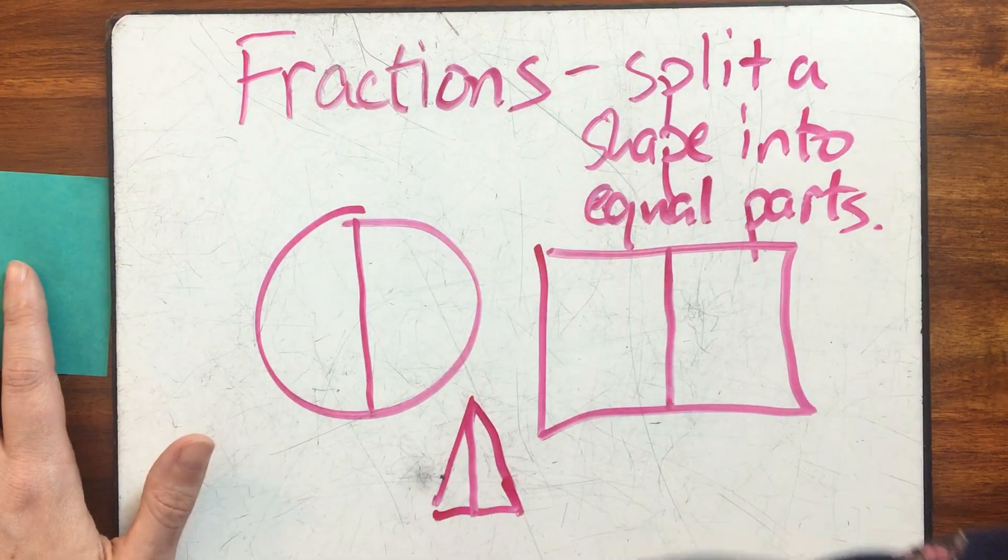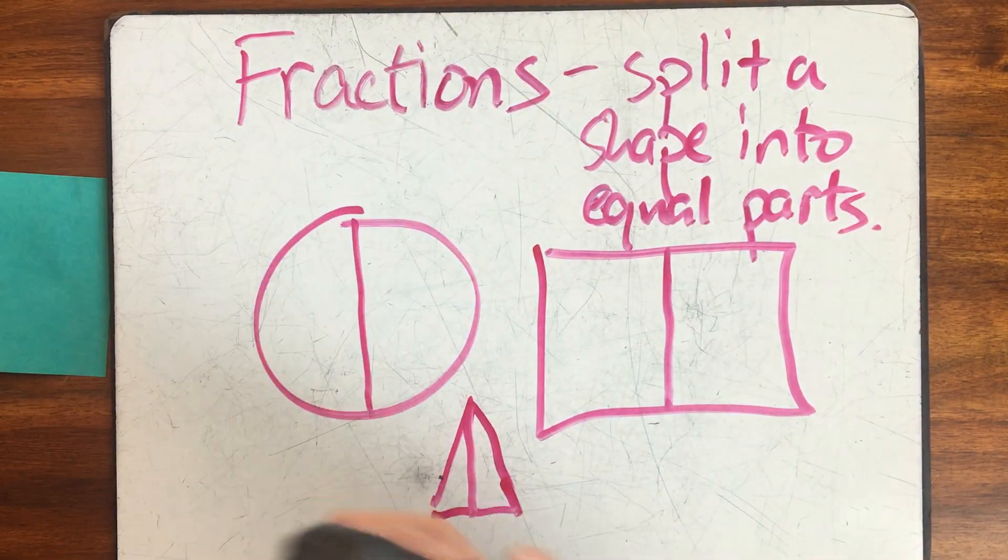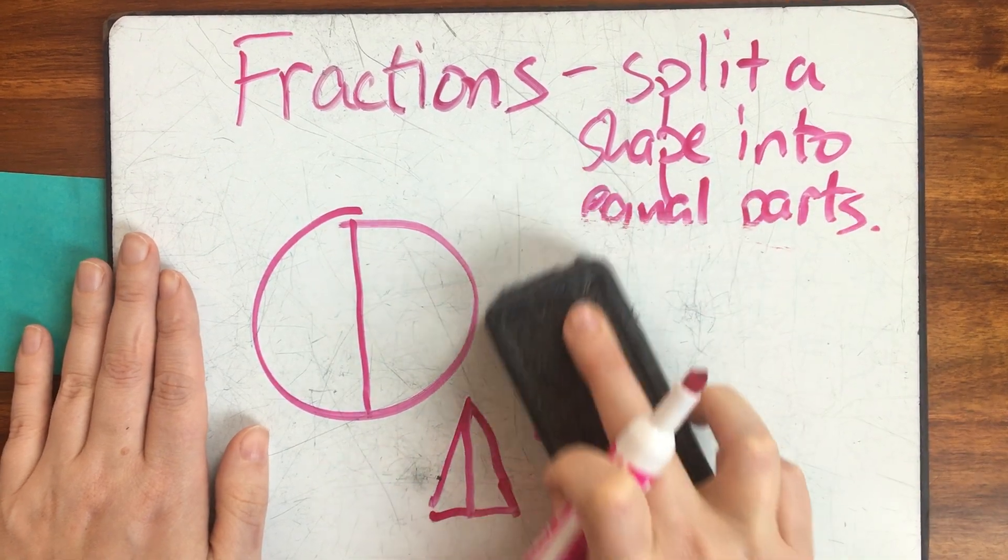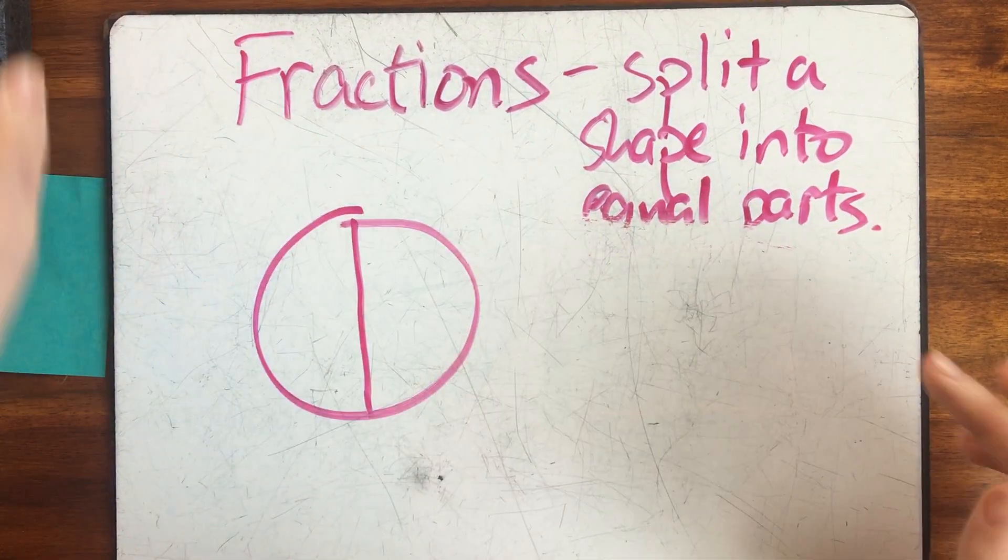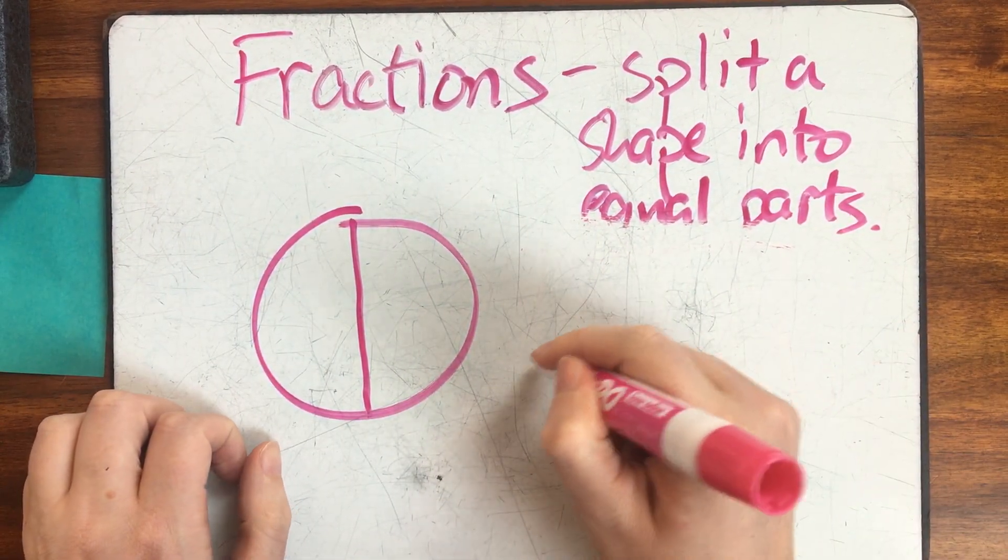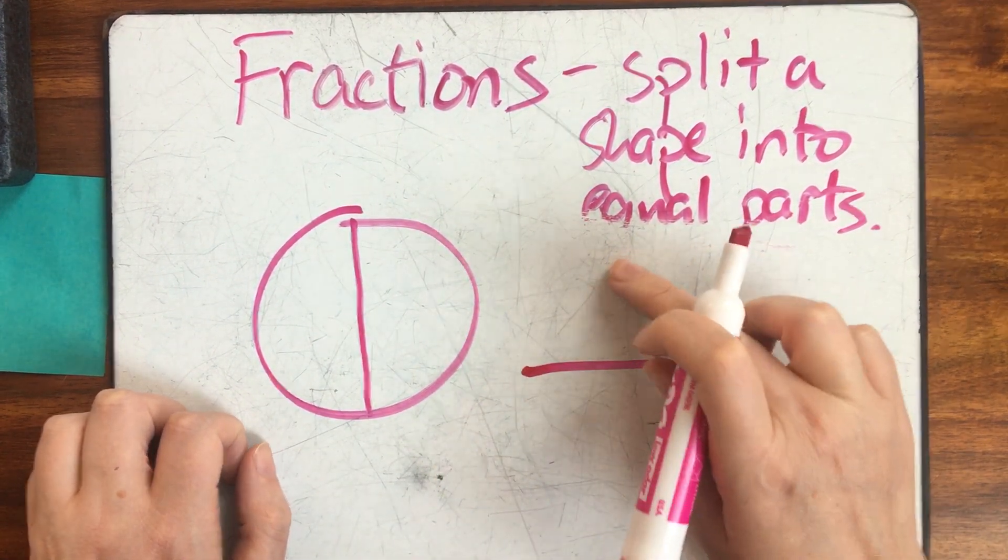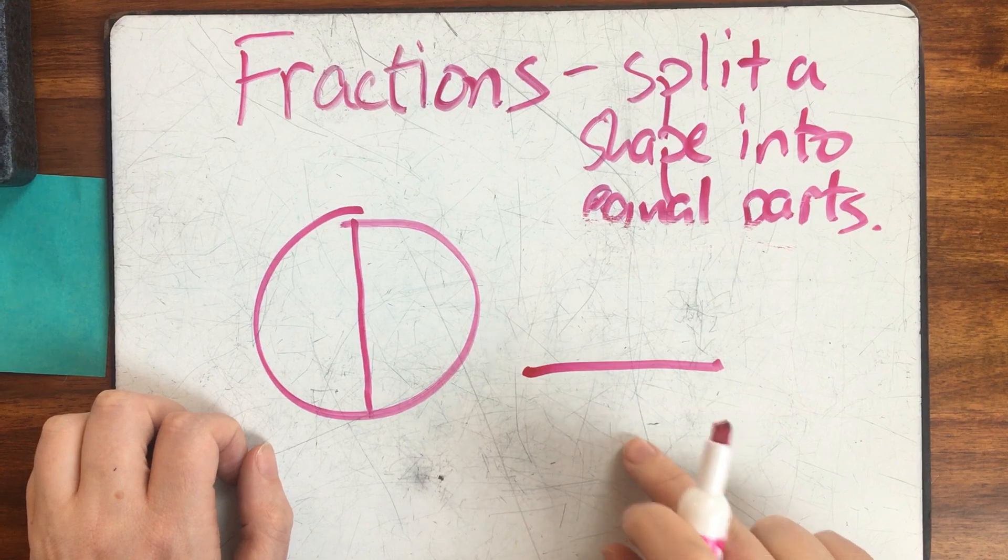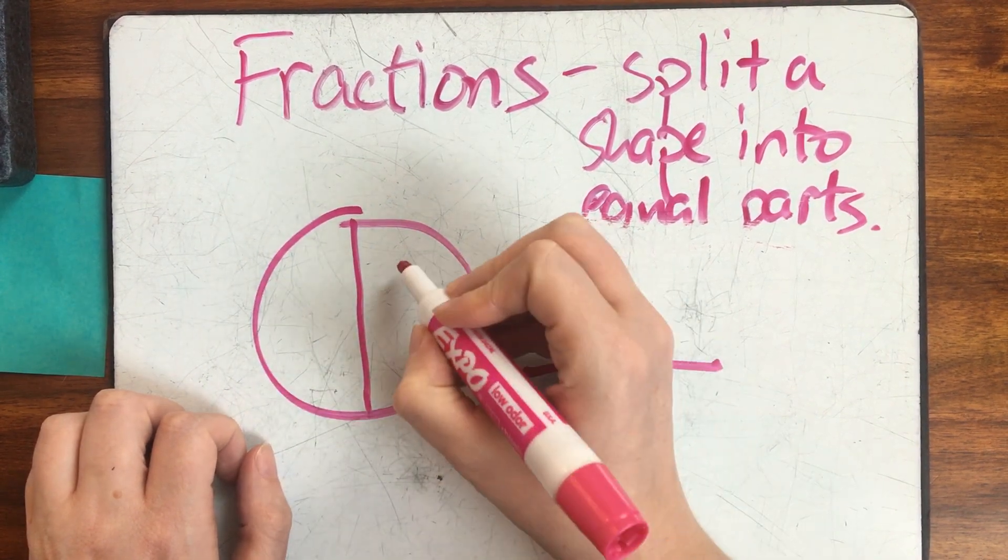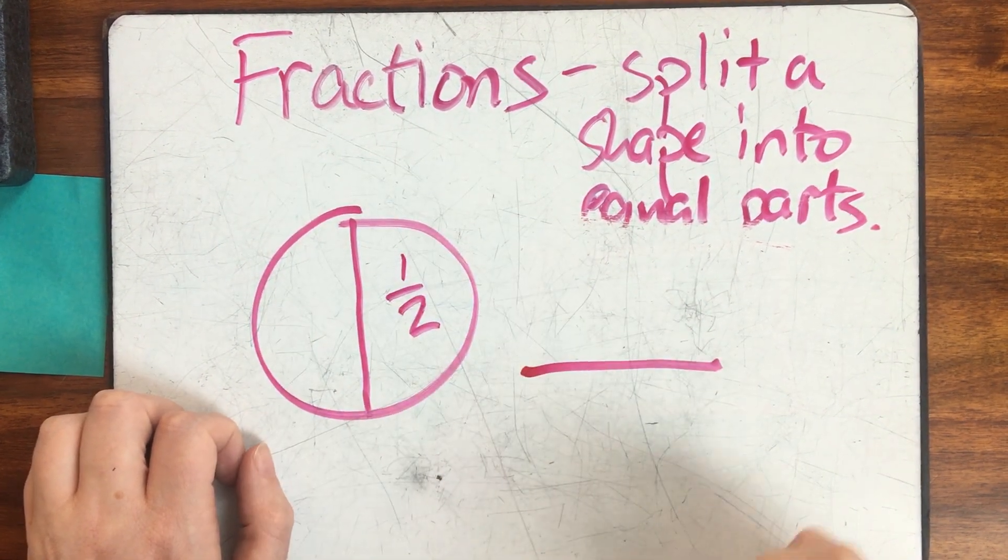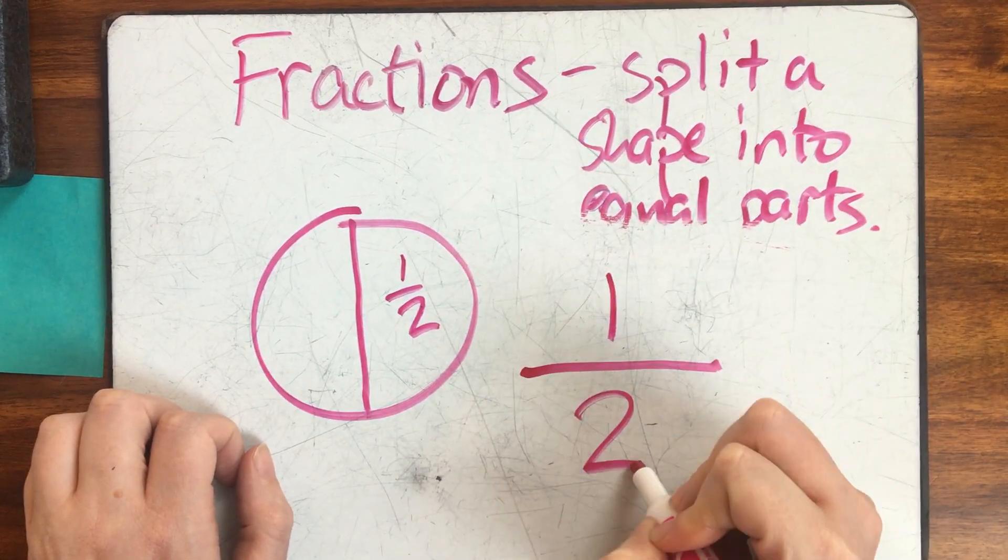Now let's talk a little bit about how to write a fraction. I'll just use my circle as an example today. We write a fraction like this with a line in between. There's a number on top and there's a number on the bottom. This is the fraction that we're going to use to represent this part of the circle. One half.